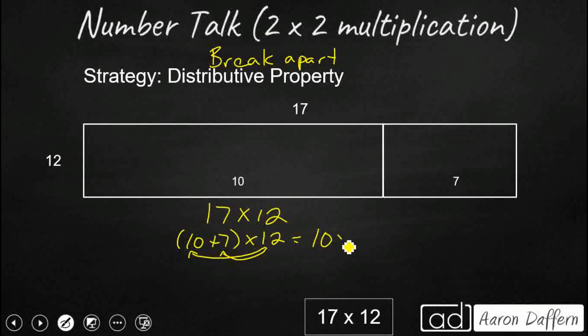So 10 times 12, that's pretty easy. That's 12 with a 0, because anything times 10 is just that number with a 0. And then we need to add up this other 7 times 12. So that's a fact we should probably know. 7 times 12, that's going to be 84.